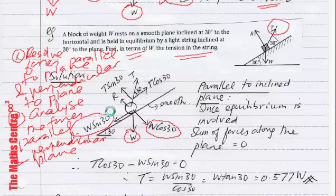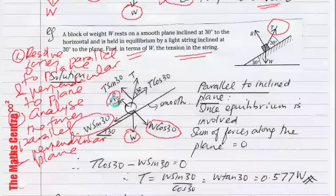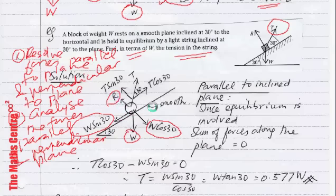The normal reaction R is perpendicular to the plane, so we don't have to worry about it when resolving parallel to the plane. Since R is perpendicular to the plane, we don't need to do anything about it when looking at the parallel direction.